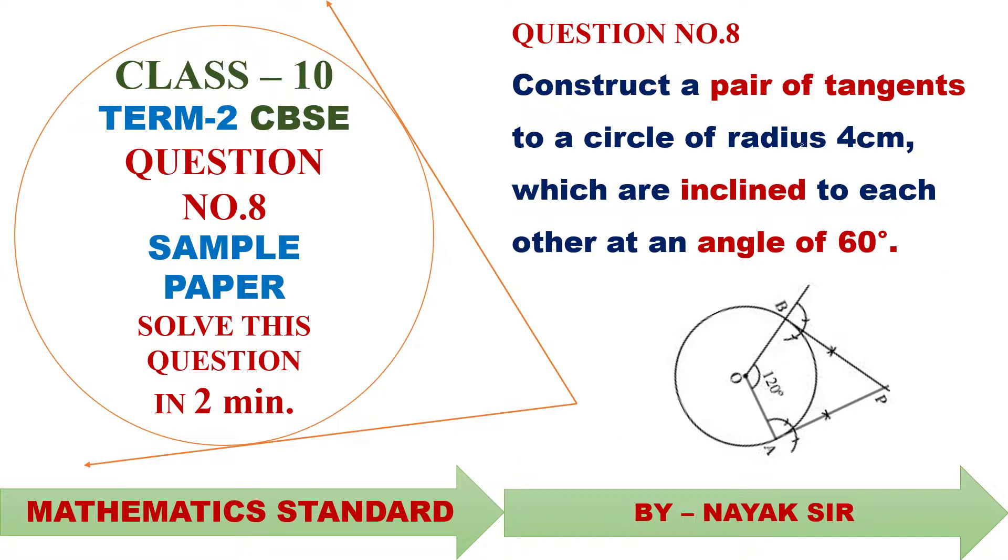The question is: construct a pair of tangents to a circle of radius 4 cm which are inclined to each other at an angle of 60 degrees. So this is the construction.